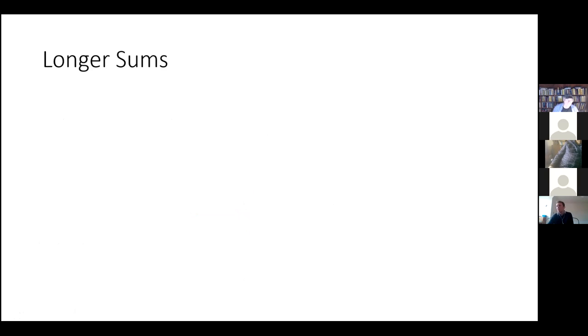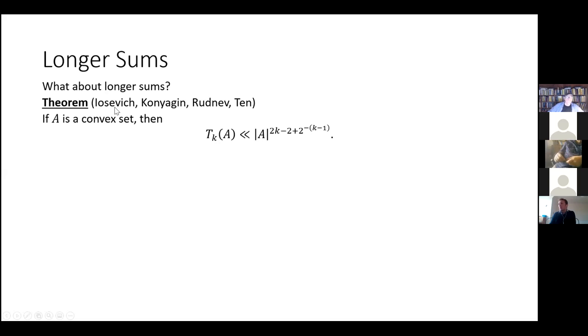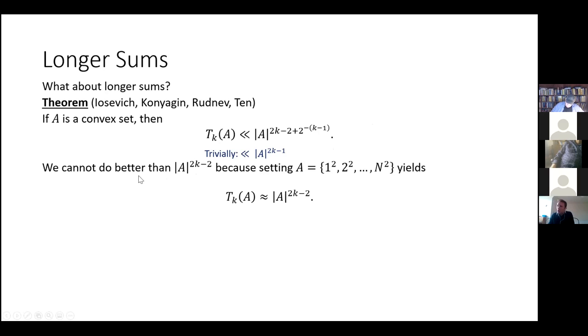So let's talk about longer sums for a sec. The best known result at the moment is due to Jozevich, Konyagin, Rudinov, and Ten. And they showed that if A is a convex set, then the K-fold additive energy is bounded above by the size of A to the power of 2K minus 2 plus 2 to the power of minus K minus 1. And now if you look at this superficially, pardon me, if you look at this superficially, you might be a little unsatisfied with it because the trivial bound is the size of A to the power of 2K minus 1. And so what this bound that they've obtained does is it can only ever get at most one away from the trivial bound in the power.